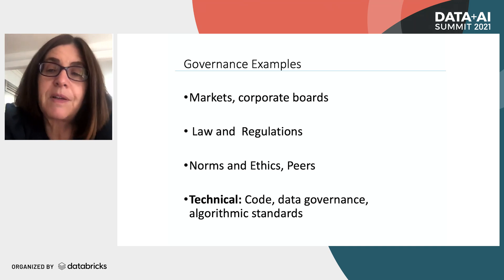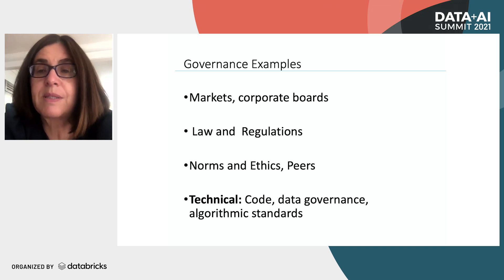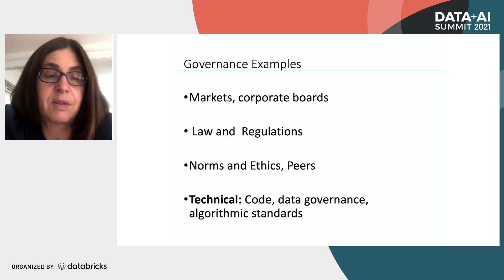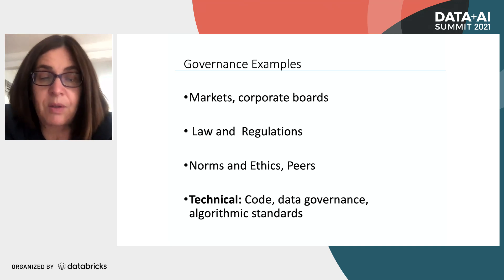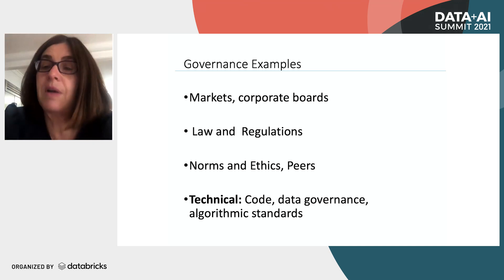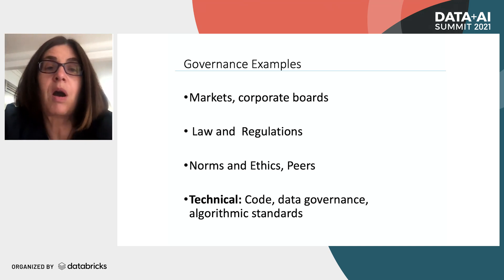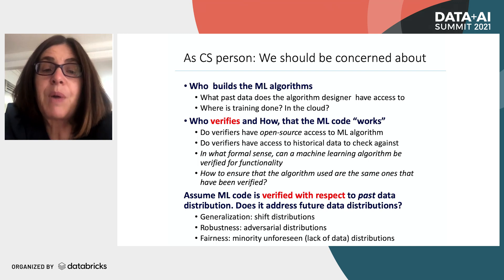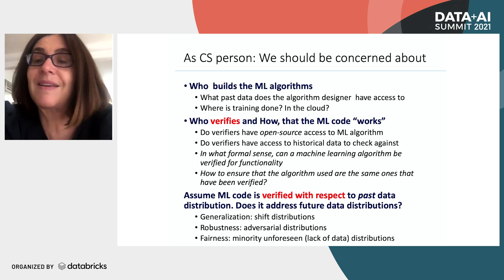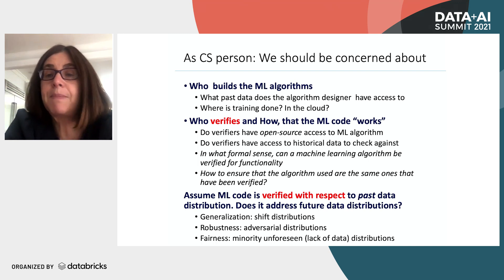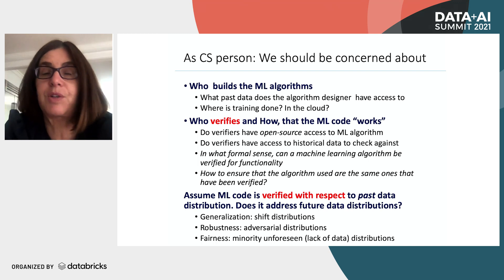In the specific example of using machine learning for decisions such as bail or no bail, giving a loan or not — we need a different kind of governance. As a computer scientist, there are probably three minimum concerns. First, who actually built the machine learning algorithm? Since it's based on data, what past data? What kind of access does the algorithm designer have? Where did they train it? Was it a secure environment?